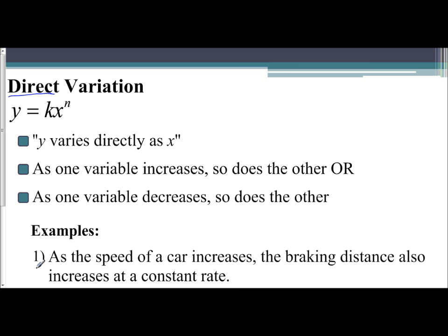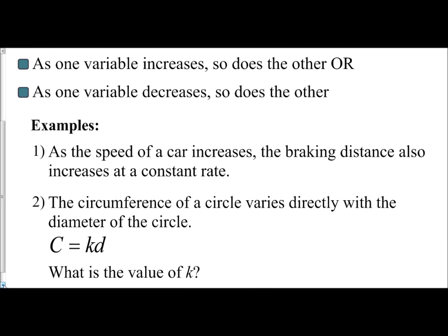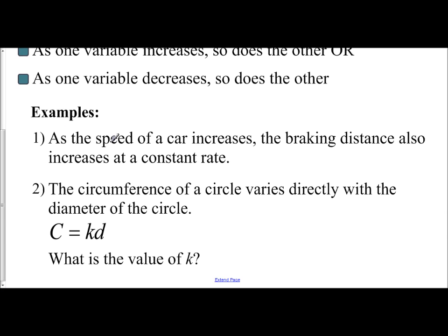The example we're going to work with here: as the speed of a car increases, the braking distance increases at a constant rate. This introduces the idea of direct variation.